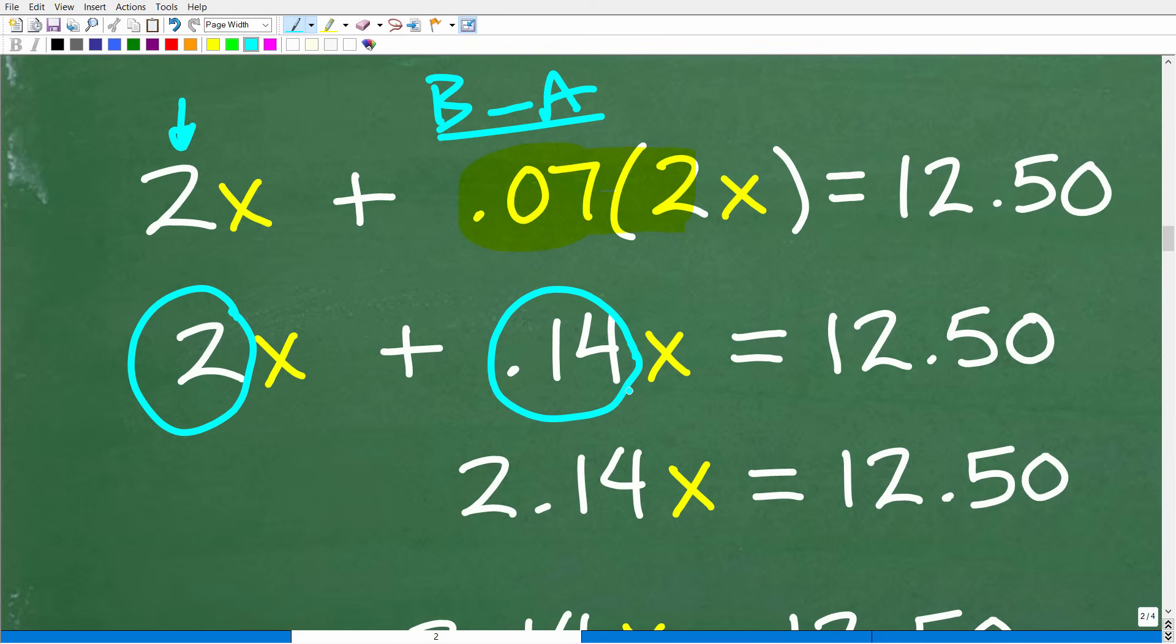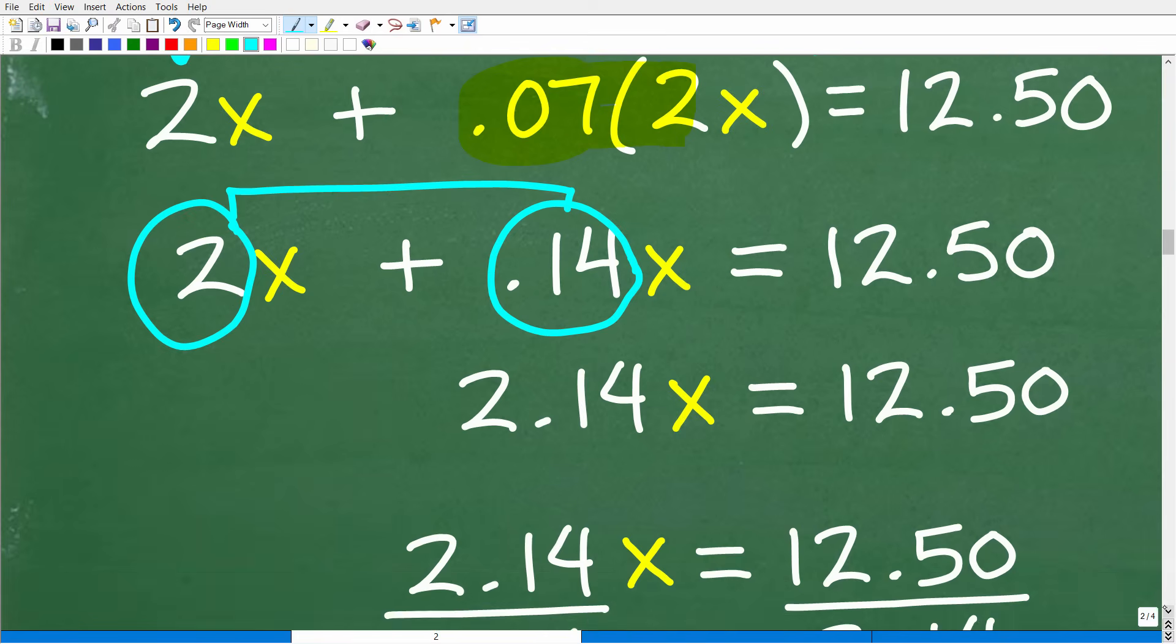But what we need to do here is recognize that X and X, these are like terms. In other words, if I have 2X plus 5X, these are like because we have the exact same variable here to the same power. So what we need to do or what we can do is add the coefficients. So 2X plus 5X is equal to 7X. So here we have 2X plus 0.14X, so we can add 2 and 0.14 and we get 2.14X is equal to $12.50.